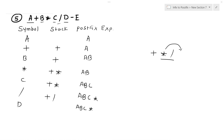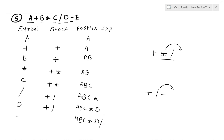The next symbol is 'd' — d is an operand so it directly goes into the postfix expression. The stack has plus and division. The next symbol is minus — minus has lower priority than division, so division is popped first. The expression becomes a, b, c, multiplication, d, division. Then plus and minus have the same priority, so plus must also be popped. The stack now has only minus.